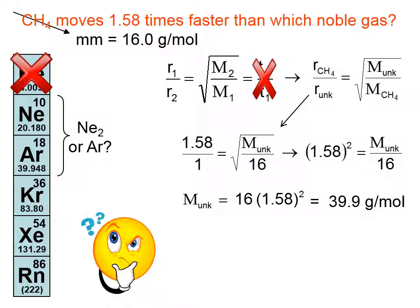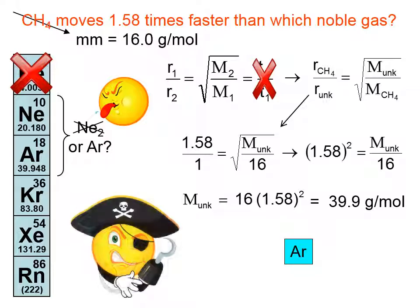Are we looking at Ne2, or are we looking at argon? Because if you take two Ne's, that's really close to 39.9, and of course, argon is right at 39.9. But neon is not diatomic. It's definitely going to be argon.